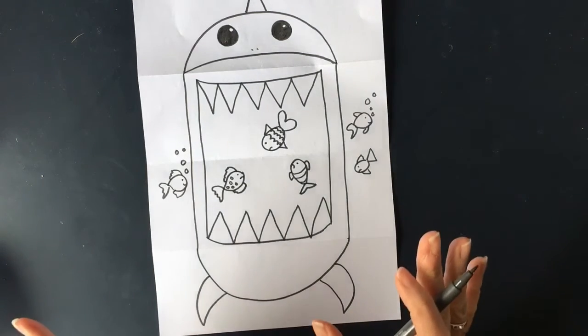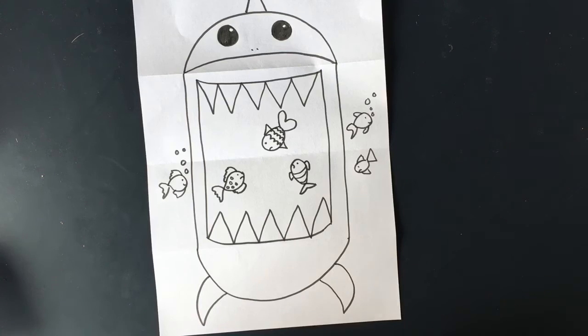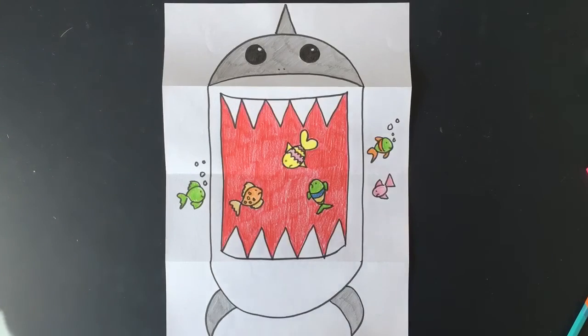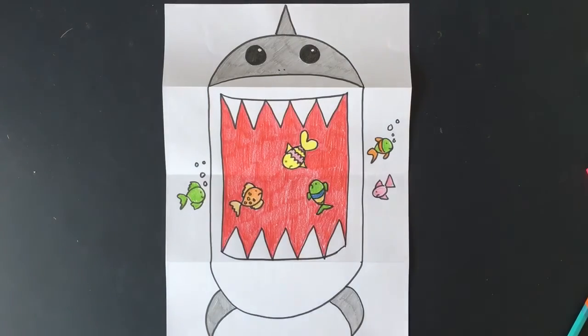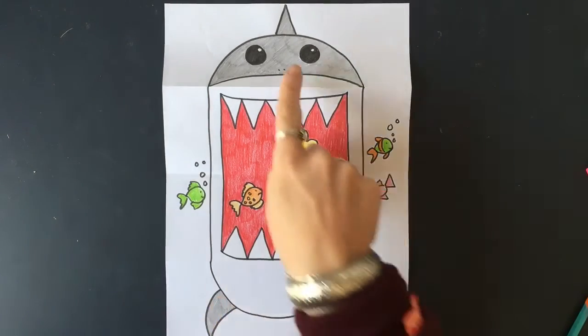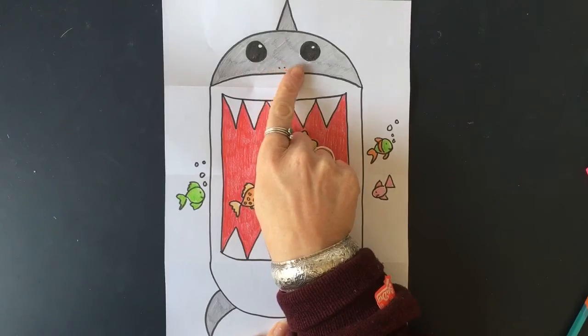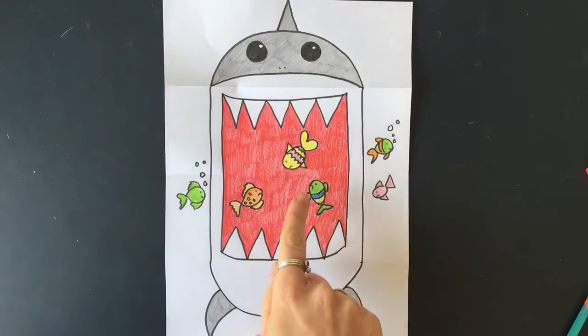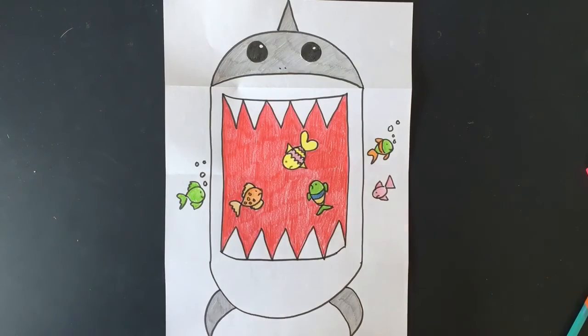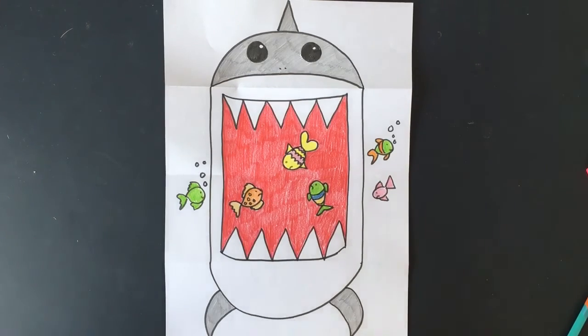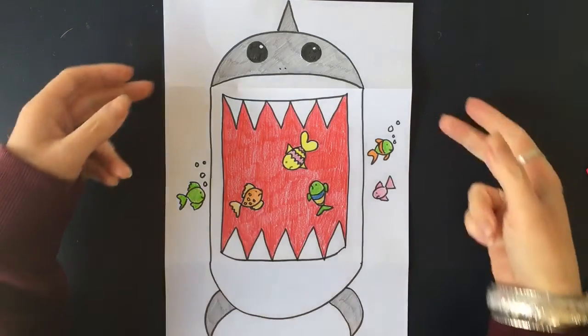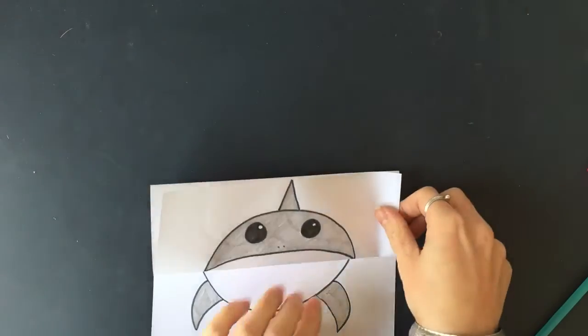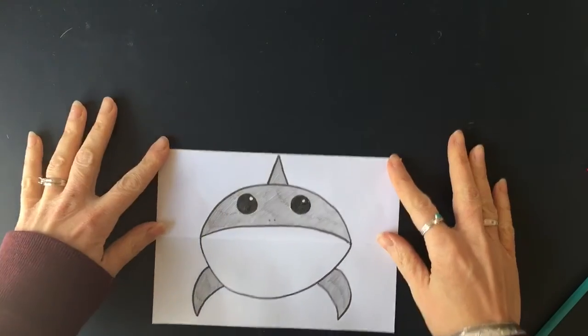And the next thing you need to do is color it in, and then you can play with it. I colored mine in now. I couldn't find a grey, so I literally just used my pencil to color the outside of the shark in, the skin. Red for the mouth, and then the fish can be any color you like. Right, shall we fold it up now? So if you fold the top down like that, you've just got your shark.